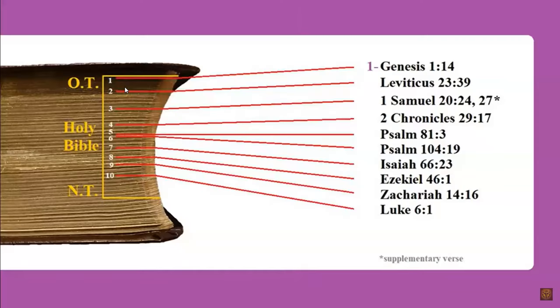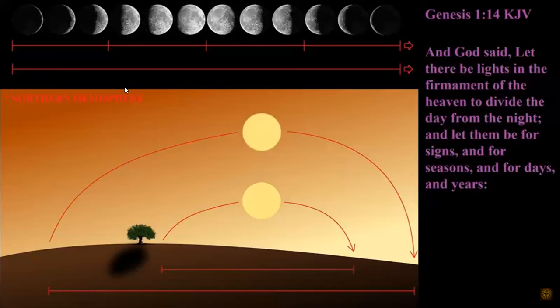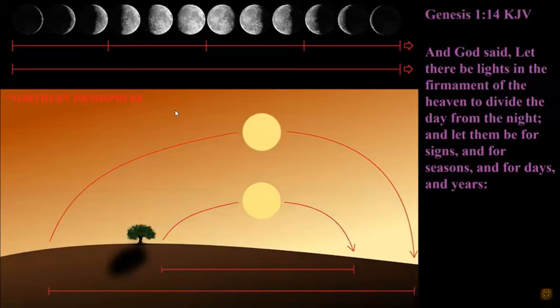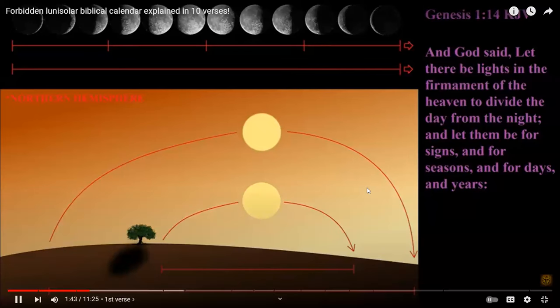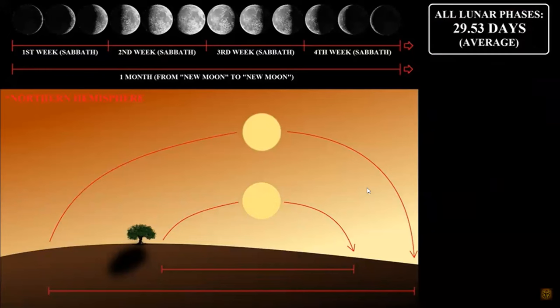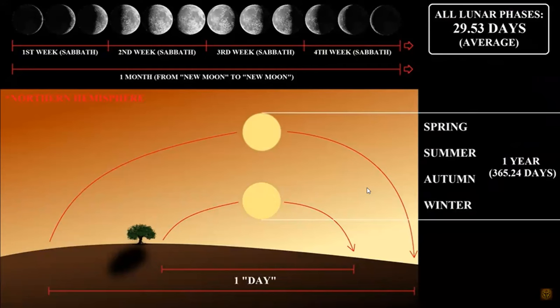Our first verse is located at the very beginning of the Bible: 'And God said, Let there be lights in the firmament of the heaven to divide the day from the night; and let them be for signs, and for seasons, and for days, and years.' From this verse alone we can build an entire biblical calendar. As you can see, the sun and the moon have been created to be observed and used to count the time.